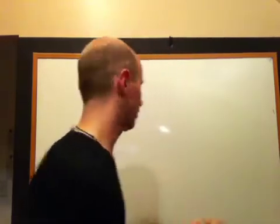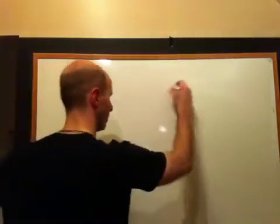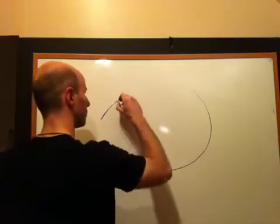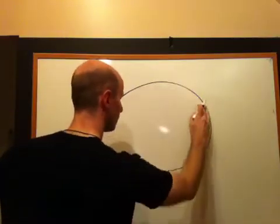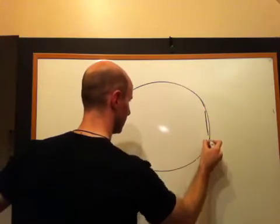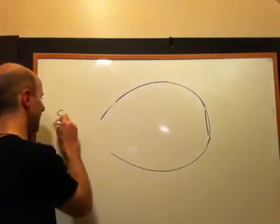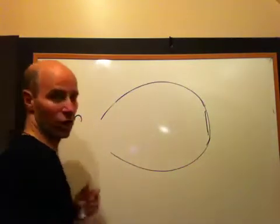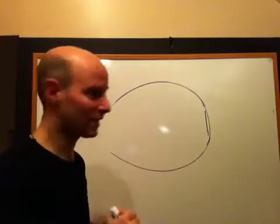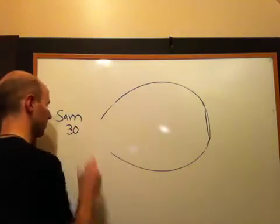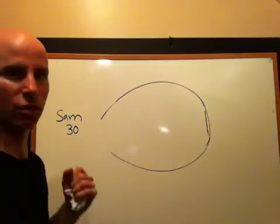So here's the problem. There are two runners running around a track. Here's our track. Runner one, this person's name is Sam. Sam can run around this track because he's really fast. He can do it in 30 seconds. It takes him 30 seconds to do the loop.